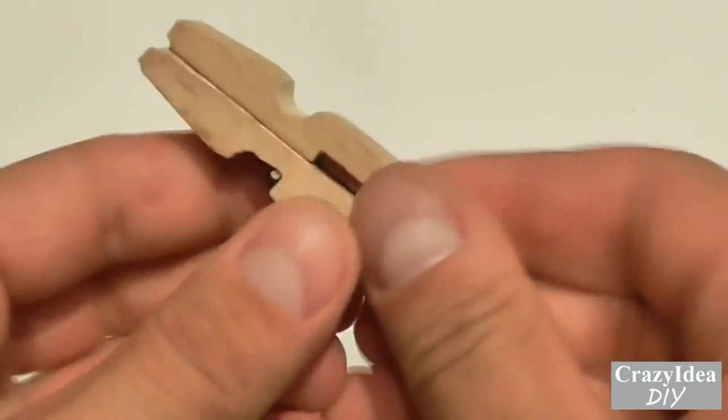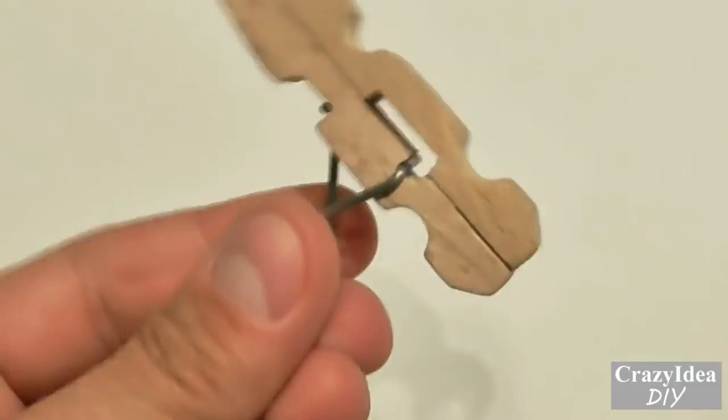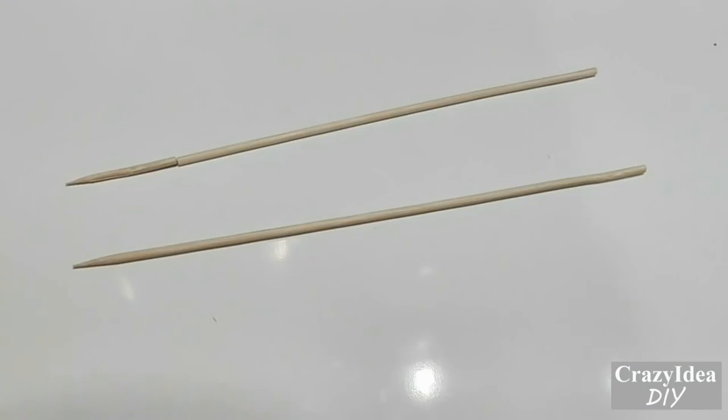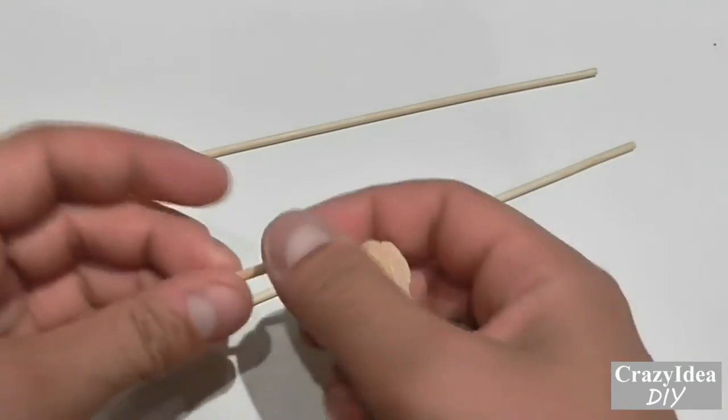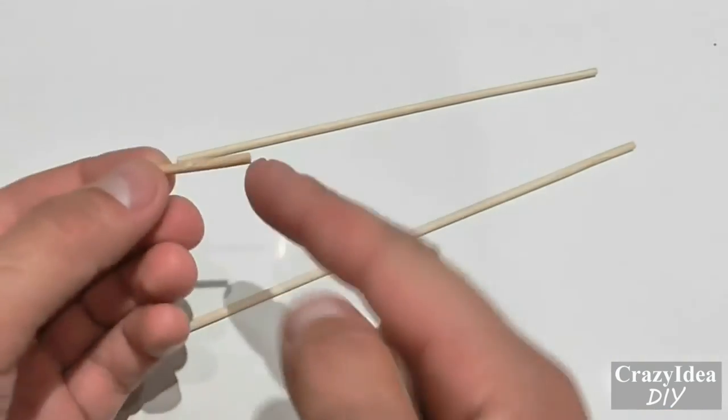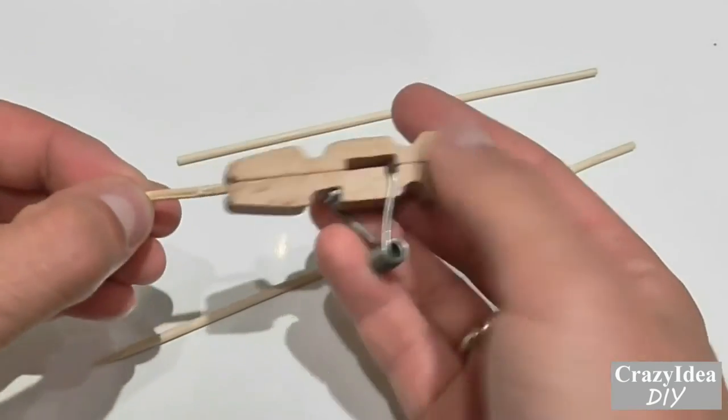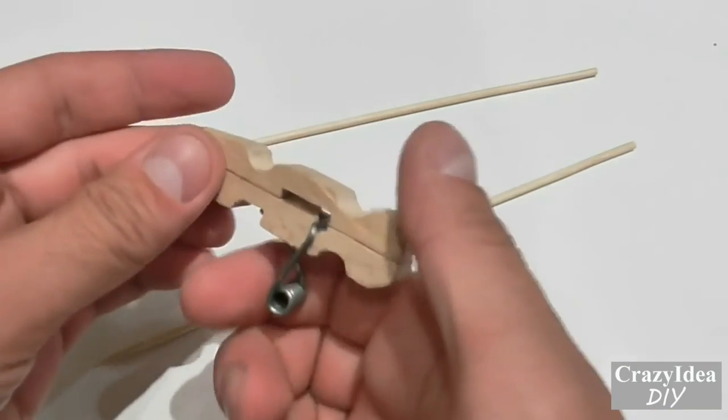Fit it like this, put it inside, and the gun is ready. Now let's take a few barbecue sticks, cut off the tip, and we make a round by cutting off the tip of a barbecue stick.